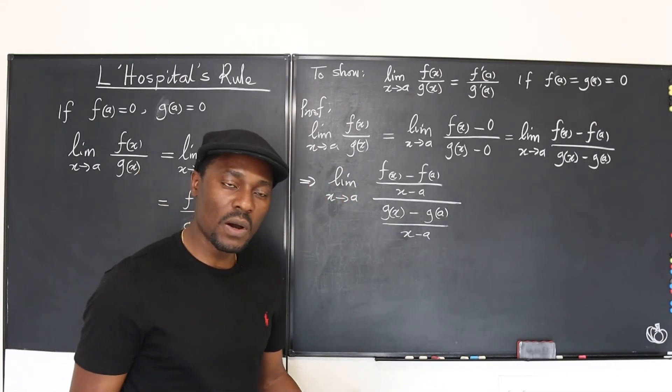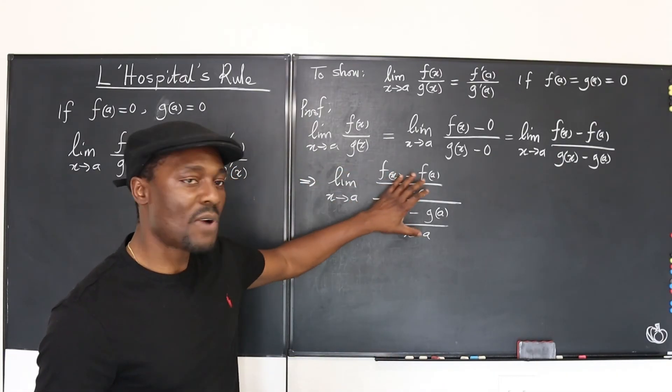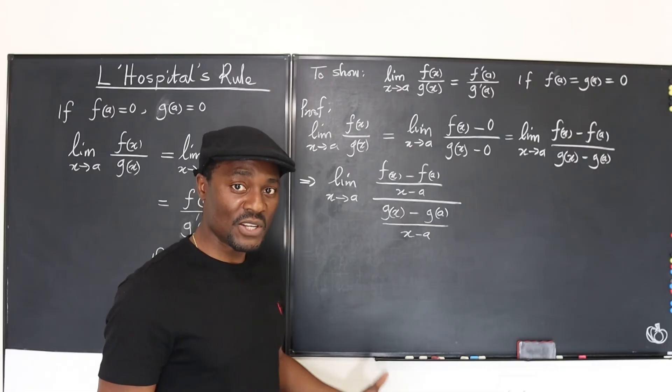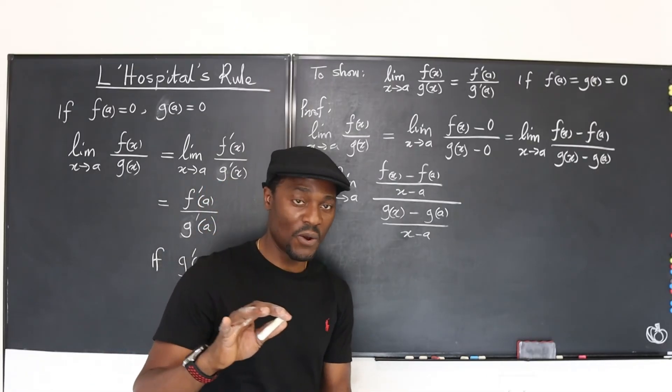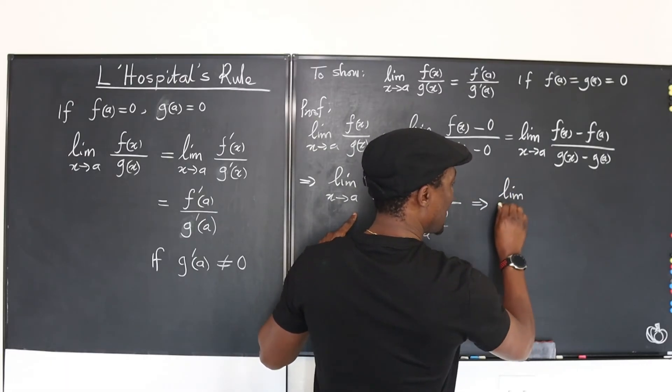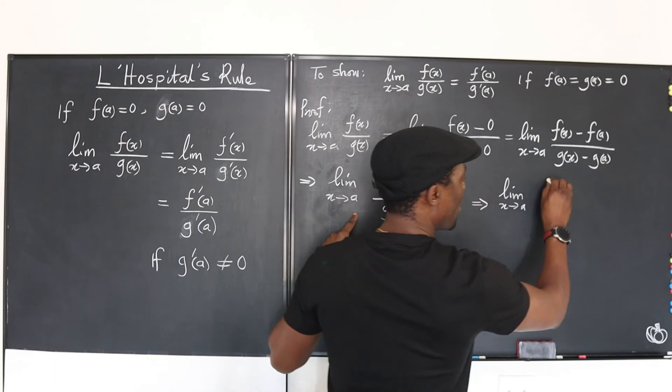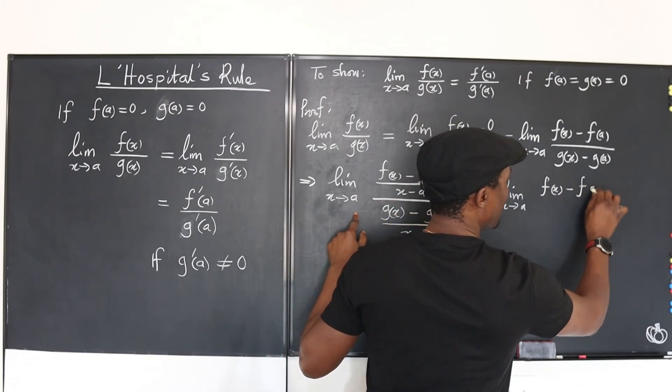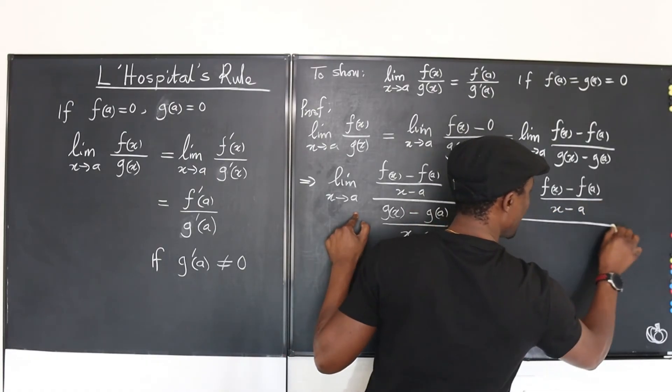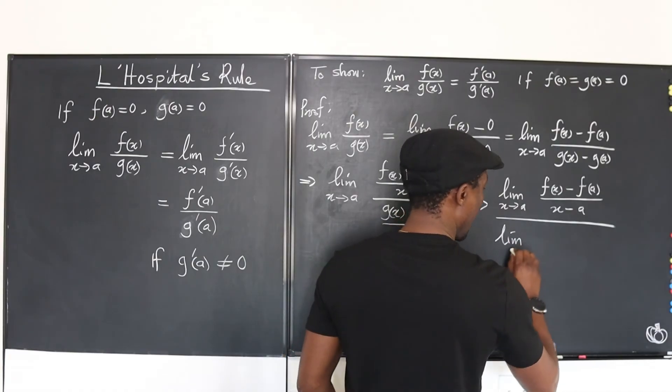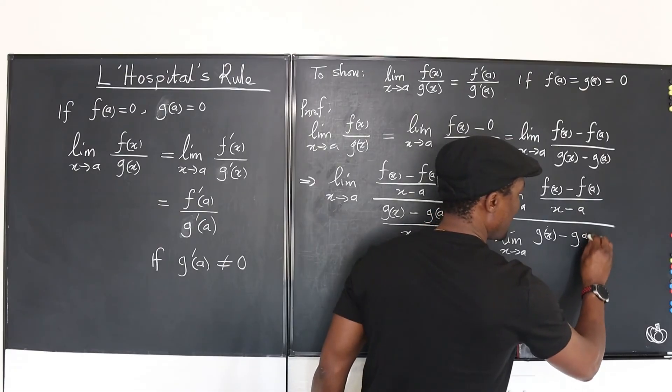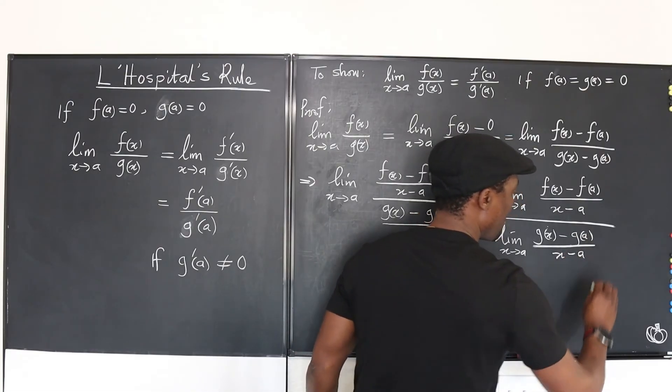Now, according to our limit laws, when you take the limit of a rational function, it's the same thing as the limit of the numerator divided by the limit of the denominator. That's the division law. So if I choose to rewrite this, this would be the same thing as the limit as x goes to a of f of x minus f of a over x minus a divided by the limit as x goes to a of g of x minus g of a divided by x minus a.